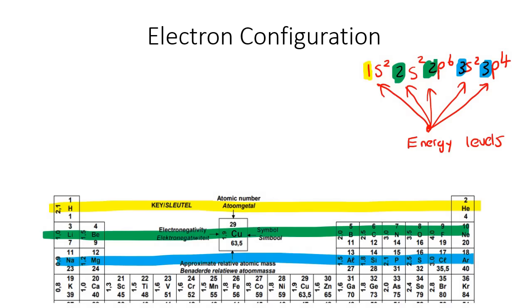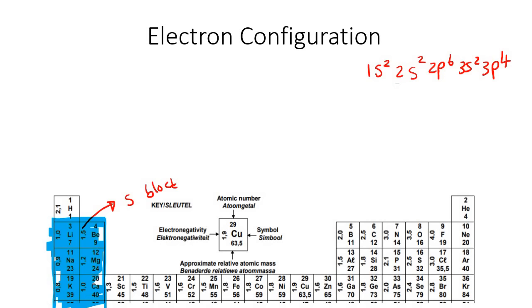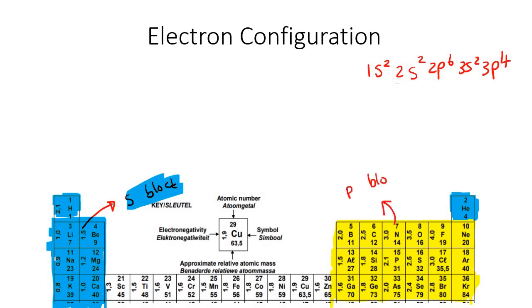Now we're going to talk about the letters — the S and the P. This part over here, we can even color that in — that whole part there is your S block. Now what's weird is row 1, this block here and this block here, they are also part of the S block. So those are all going to be part of the S block. Then this block here, all the way down — the periodic table keeps going, I'm just showing you up to this level — but all of this is what we call the P block. Your teacher might also mention a D and an F, but typically in grade 10 we're only going to be tested up to the S and P block.